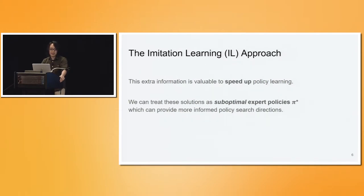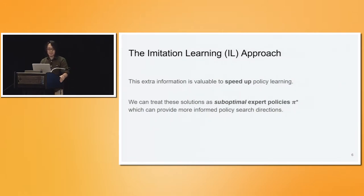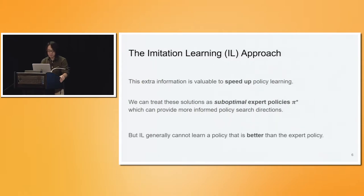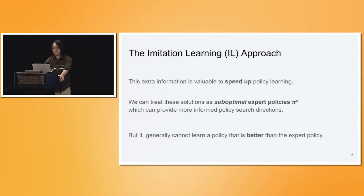The way to leverage this is to treat these solutions — like human demonstrations or previous research results — as some sort of suboptimal expert policies, and use those policies to do imitation learning. The extra demonstrations from those suboptimal experts can actually provide a more informed direction in the policy search process. But one drawback of general imitation learning is that we cannot learn a policy that's better than the expert policy.